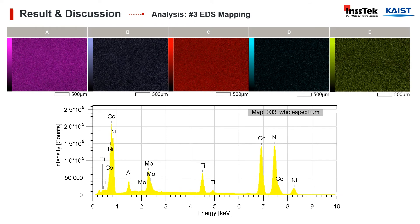The following data reflects the results of sample number three, which compared to the others presented the best performance during the EDS mapping analysis. The element mapping during the SEM analysis, or scanning electron microscopy, was performed using a magnification of 50X to observe the five elements, verifying that the high-entropy alloy has been conformed without any segregations. Due to intellectual property matters, we are unable to disclose further information regarding the composition of the samples. We thank you in advance for your comprehension.